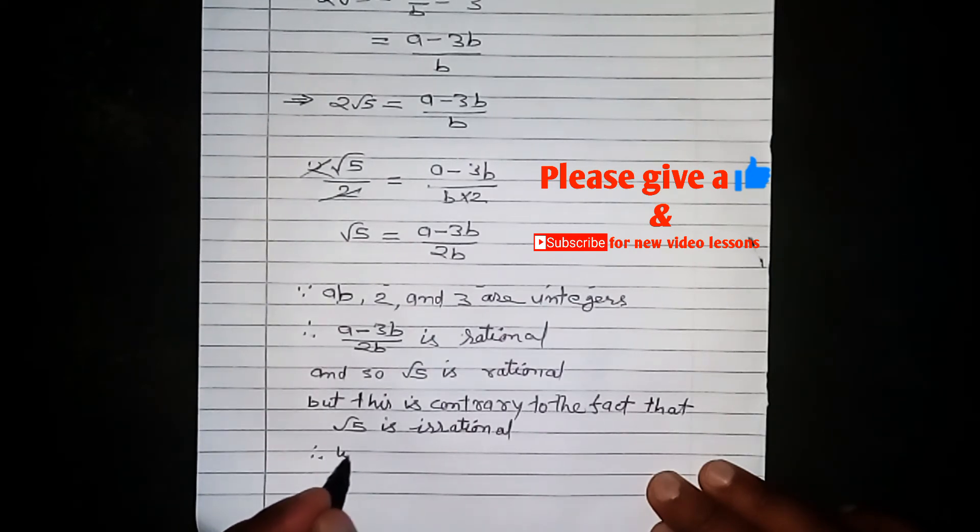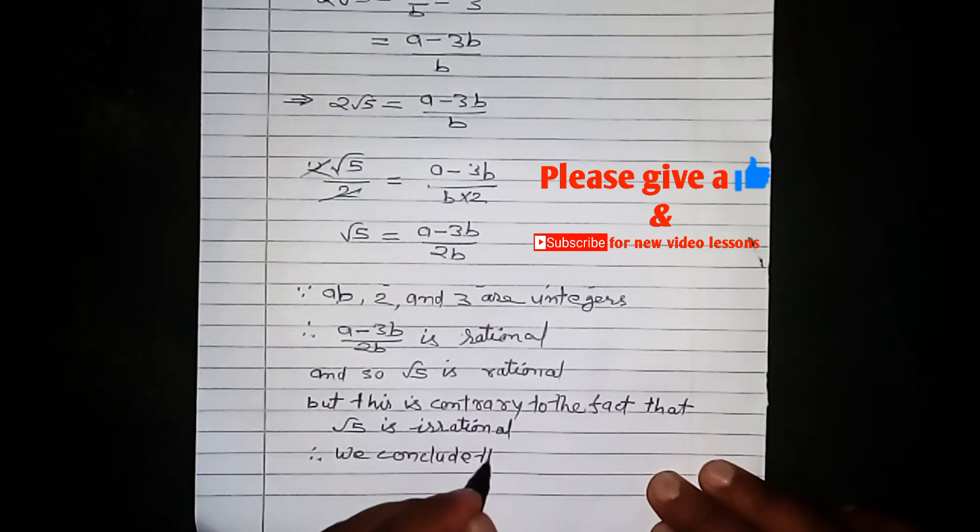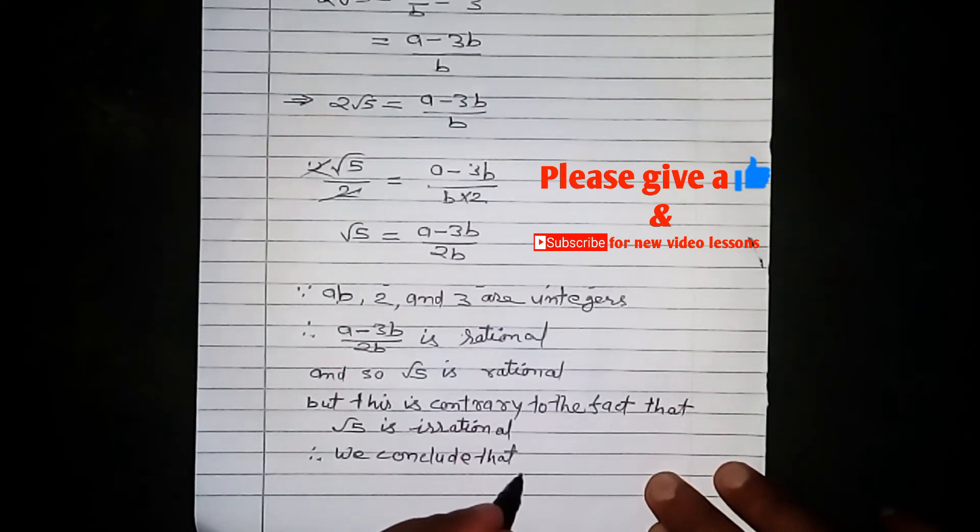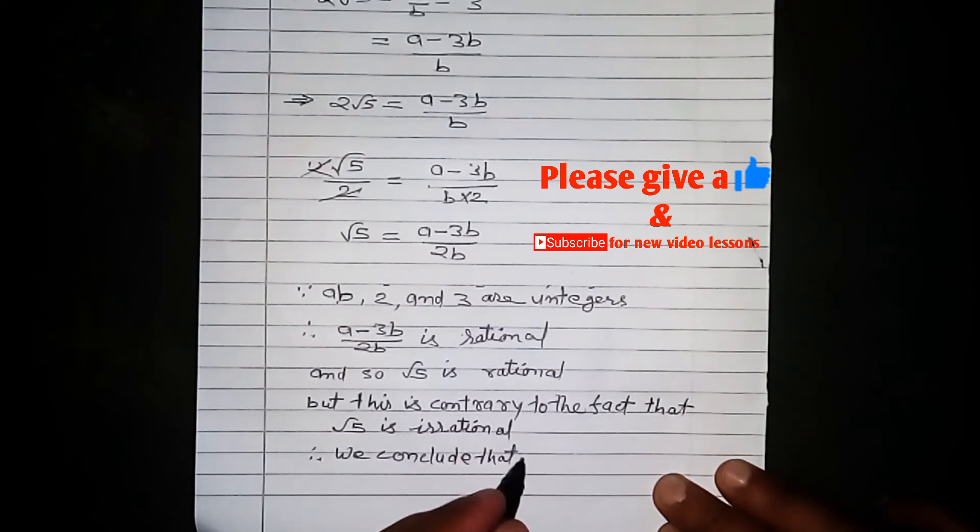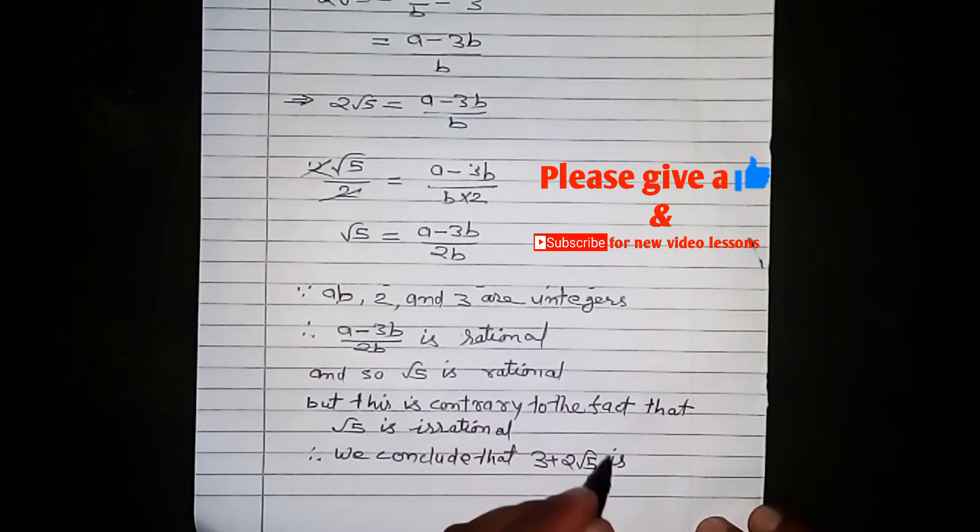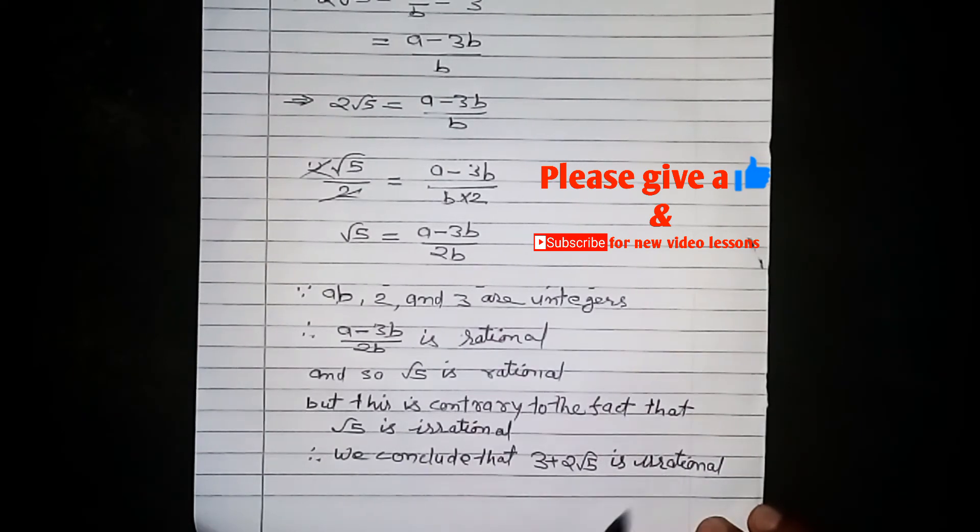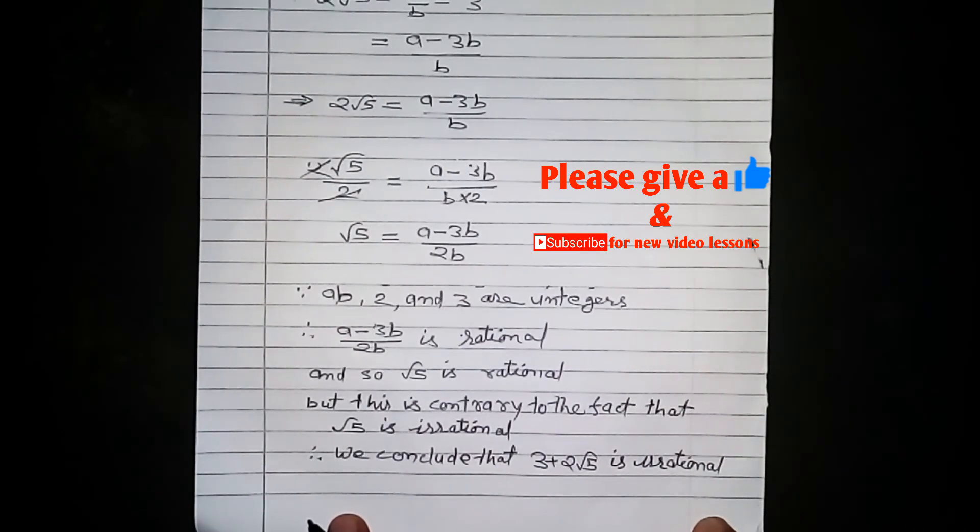Therefore we conclude that 3 plus 2 root 5 is irrational. This is what we had to prove.